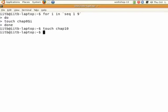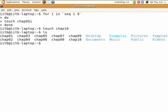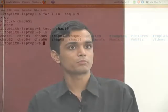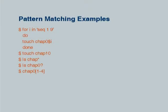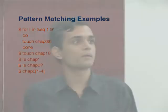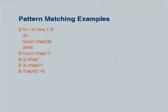Now if you do an ls you should see all those files — you see chap01, chap02 up to chap10. Now the pattern matching part: you can do an ls chap*, and star will match any number of characters after chap. So you should be getting chap01, chap02 up to 10. Then you can have chap0? — question mark will match just one character, so you should get up to 9 and not 10.